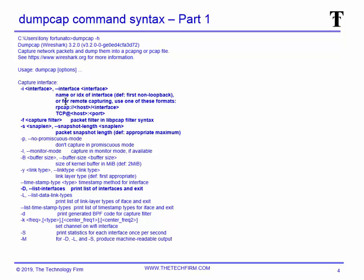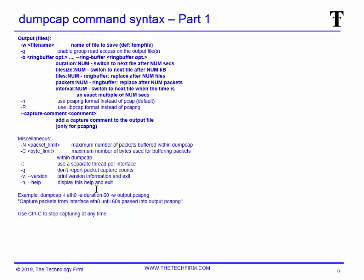I've bolded all the common commands you're going to need as you use DumpCap. There are a bunch, but I removed the ones that aren't relevant and you'll probably never use. Key ones: dash-i for your interface, which we'll use today; dash-F is a capture filter; snap length, which we'll cover; dash capital D lists all your interfaces so you know what index to use. When you create your file, stay away from the default — create a file name and a path if you can.